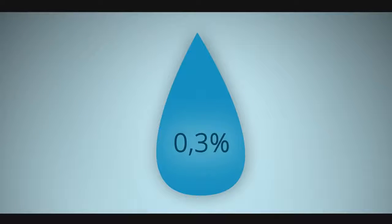The majority of the Earth's surface is covered by water. 97% of it is salt water from the oceans. 3% is fresh water found on glaciers, in lakes and in groundwaters. Only 0.3% of the world's water resources are available as drinking water.